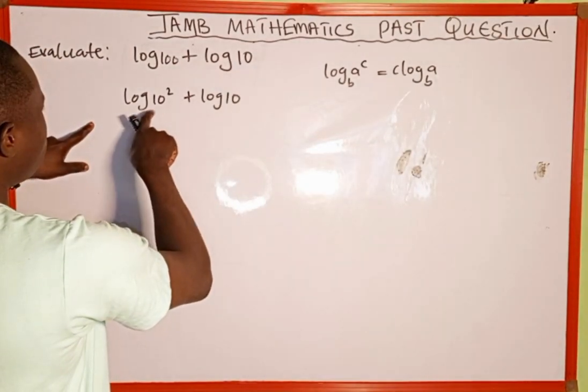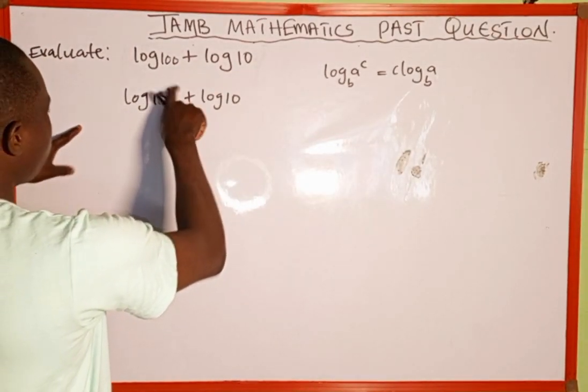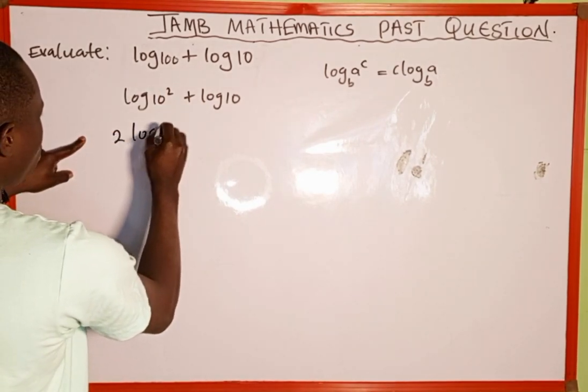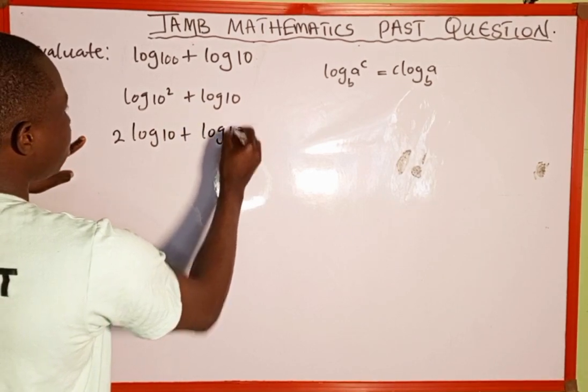So this log 10 to the power of 2, these 2 can come back to multiply the log. We have 2 log 10 then plus log of 10.